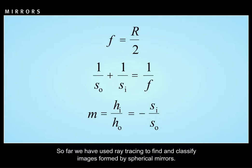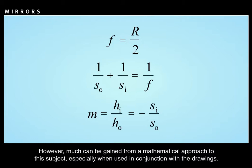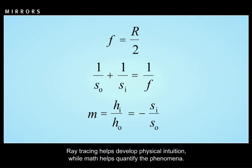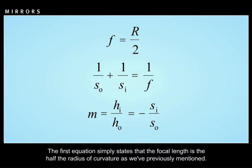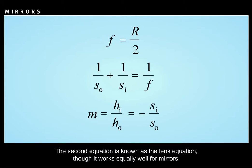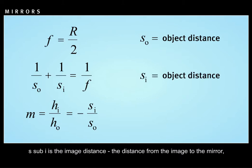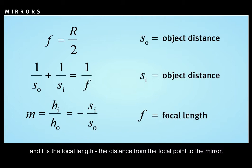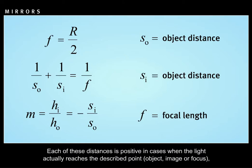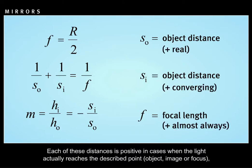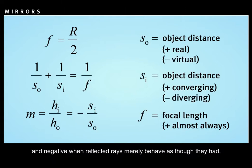So far, we have used ray tracing to find and classify images formed by spherical mirrors. However, much can be gained from a mathematical approach, especially when used in conjunction with the drawings. Ray tracing helps develop physical intuition, while math helps quantify the phenomena. The first equation states that the focal length is half the radius of curvature. The second equation is known as the lens equation, though it works equally well for mirrors: 1/S sub O plus 1/S sub I equals 1/F, where S sub O is the object distance, S sub I is the image distance, and F is the focal length. Each distance is positive when light actually reaches that point and negative when reflected rays merely behave as though they had.